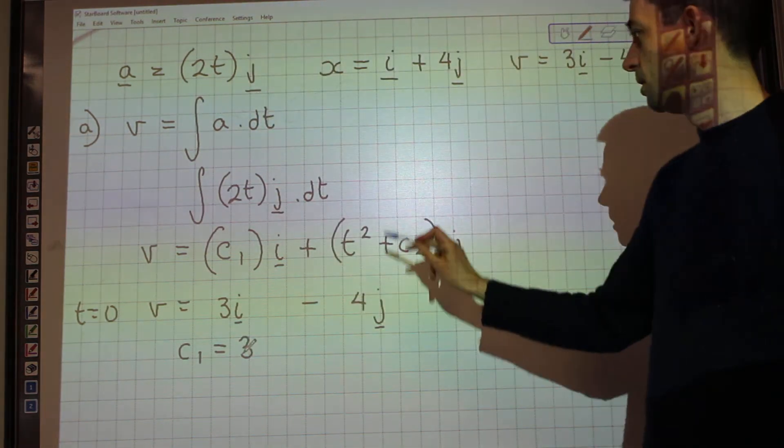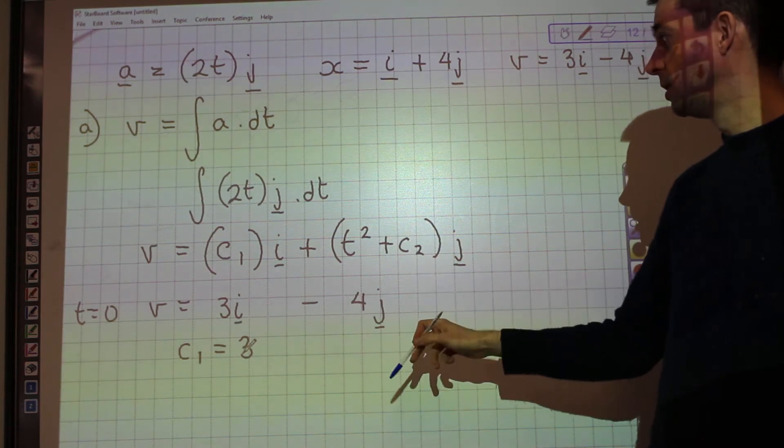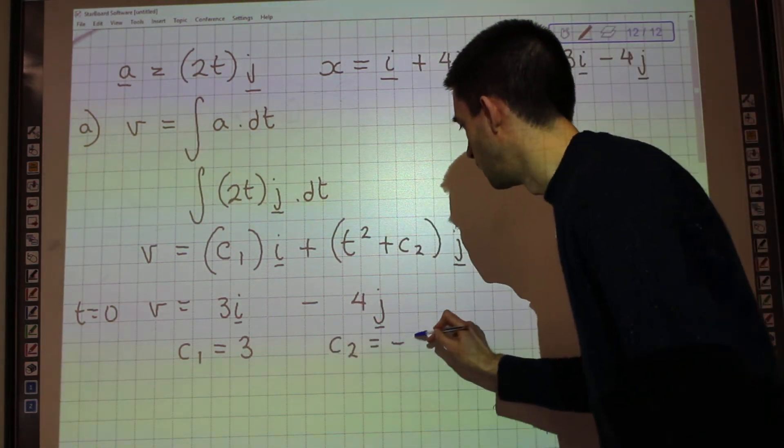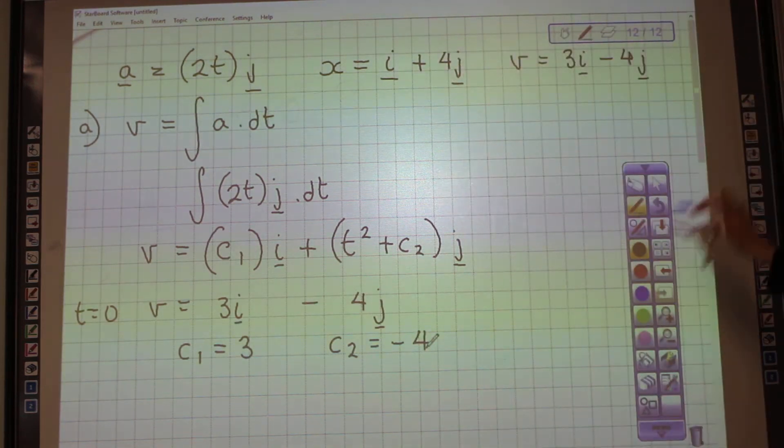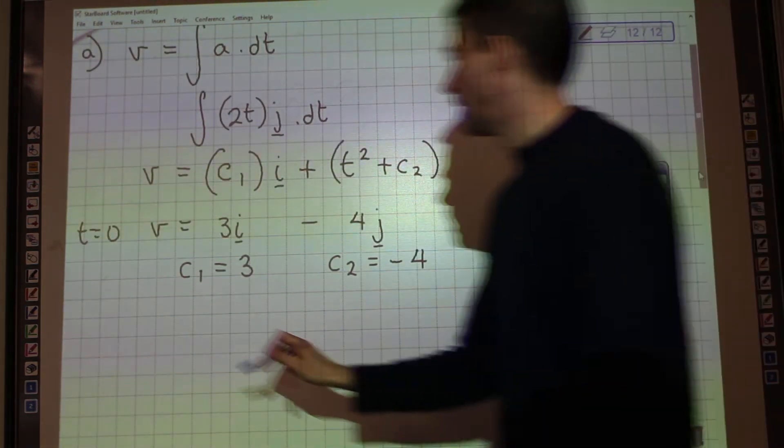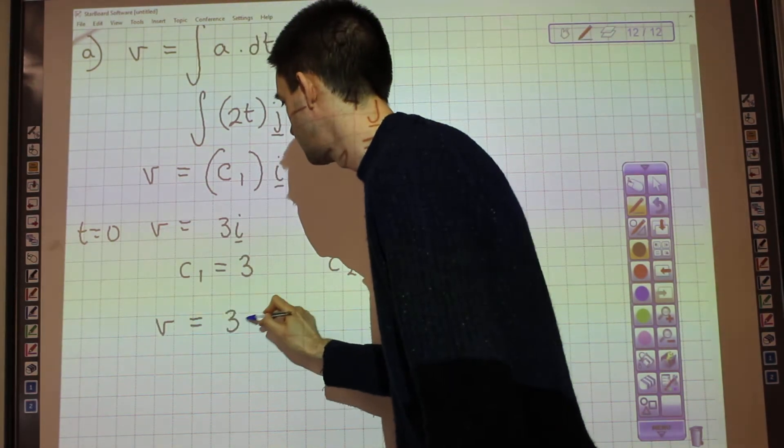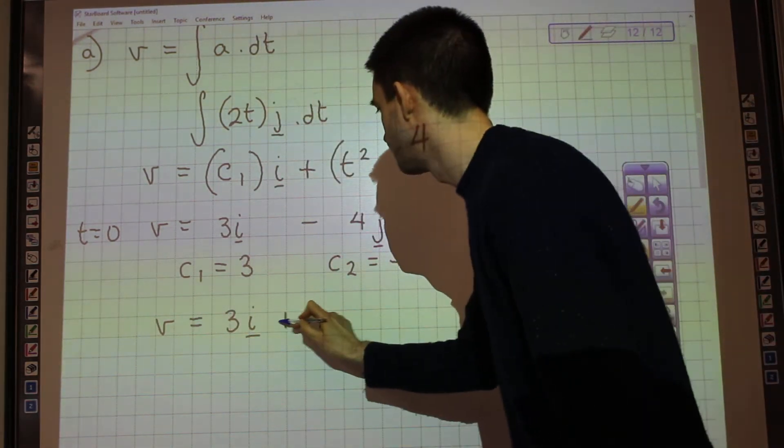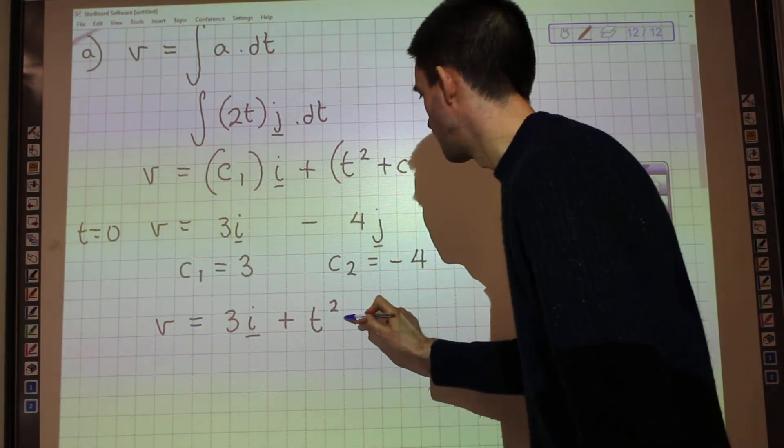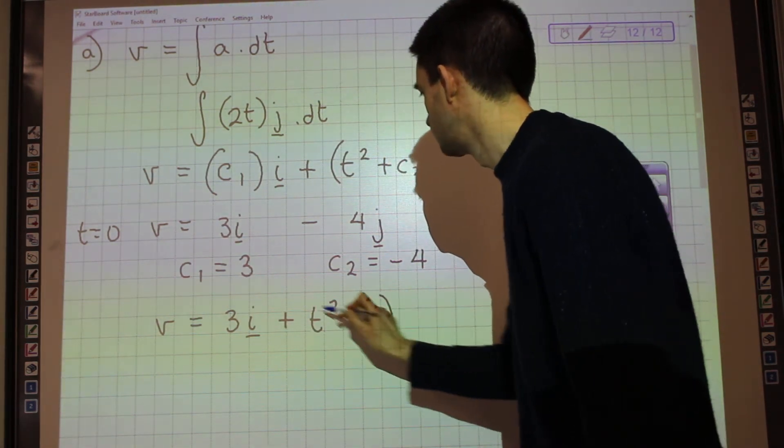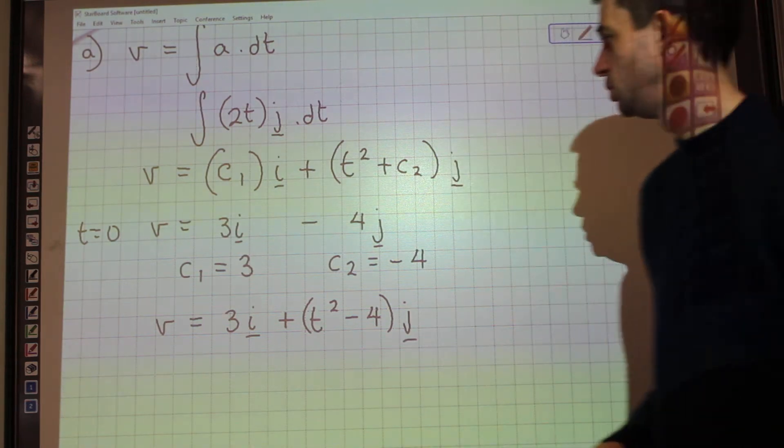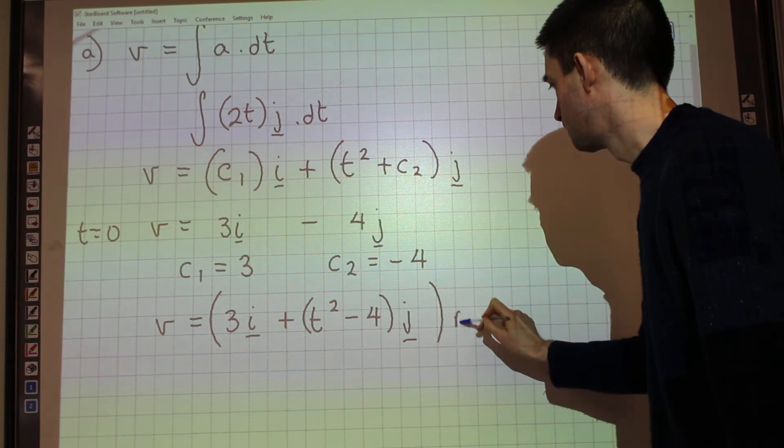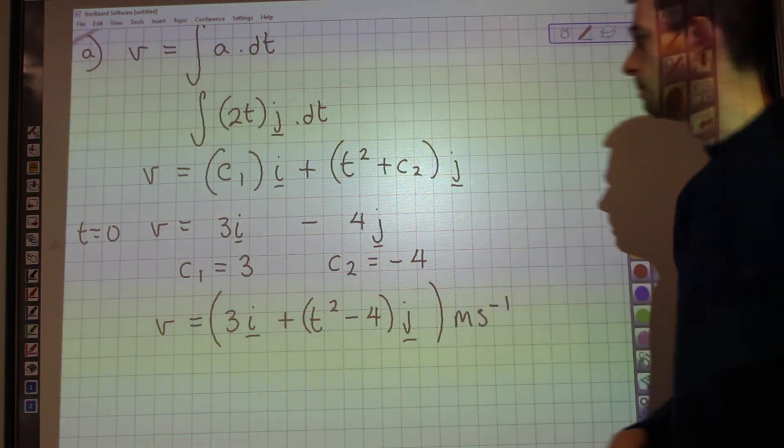And when you substitute in 0 to t squared, you obviously get 0. So that means that c2 would equal negative 4. And therefore, an expression for velocity at time t seconds is 3i plus t squared minus 4j. And that is in metres per second.